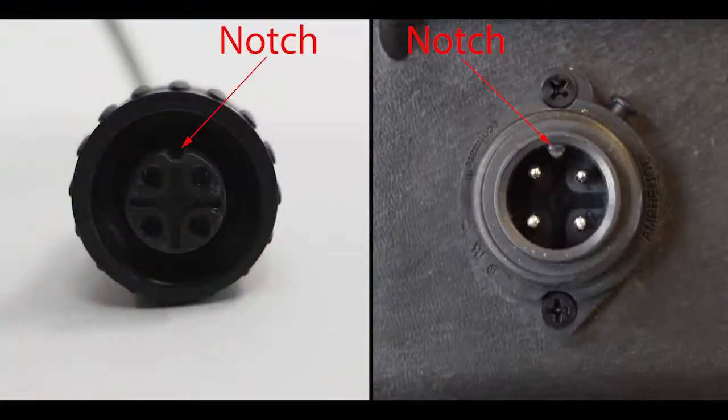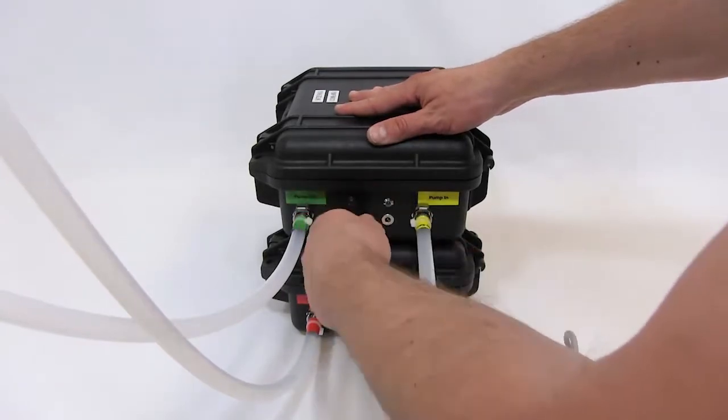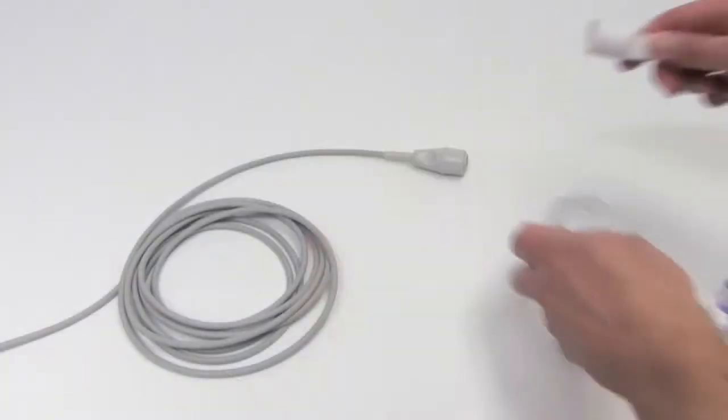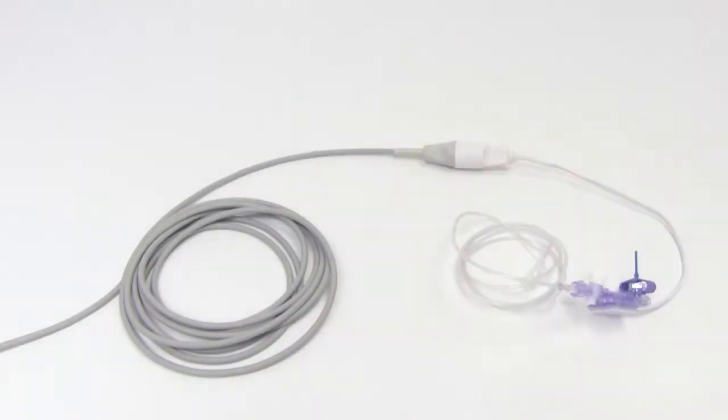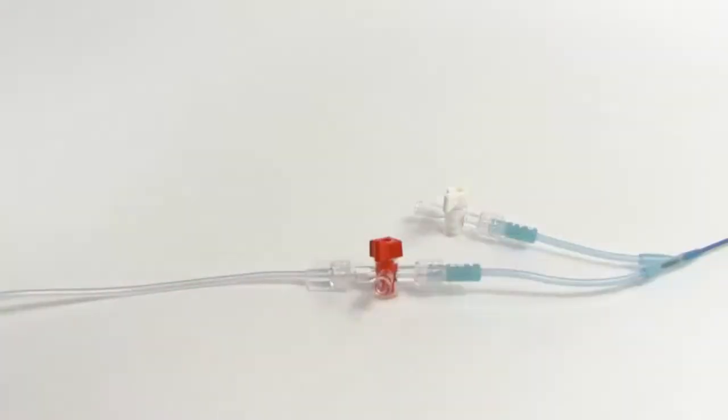Connect the blood pressure monitoring cable to the pump, ensuring the notch in the plug lines up with the notch in the socket. Plug a blood pressure monitoring transducer into the cable. Attach the blood pressure monitoring transducer extension line into the REBOA catheter's art line.